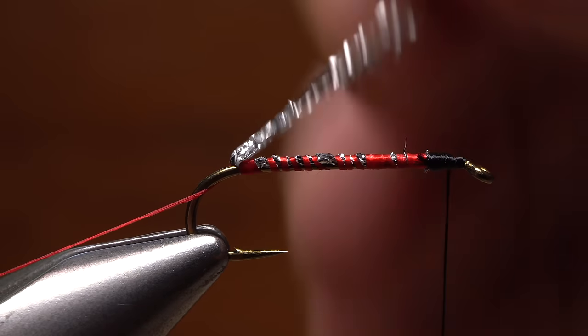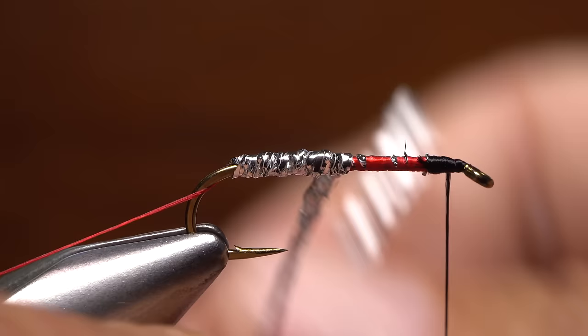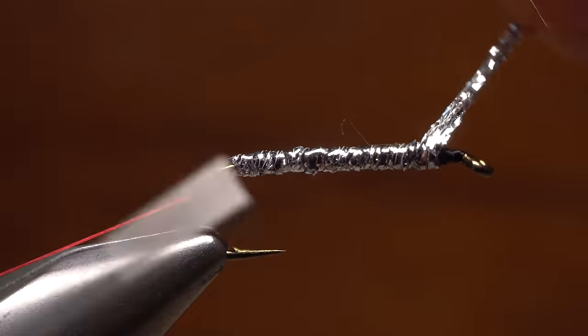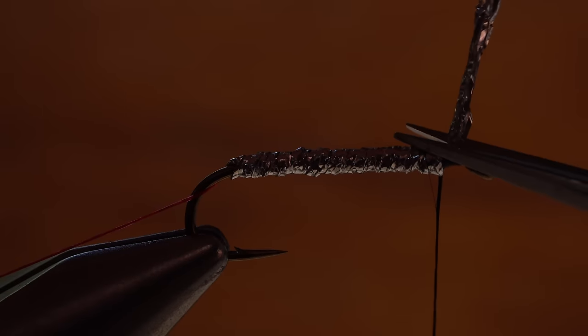Get hold of the silver braid and begin making overlapping wraps with it up the hook shank. Continue taking these wraps all the way up to your black tying thread, then use the thread to secure the braid. When you're done, snip the excess off close.